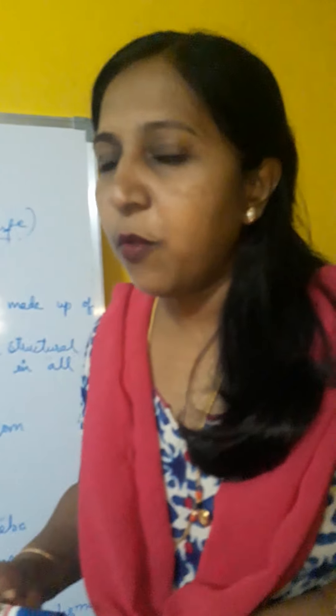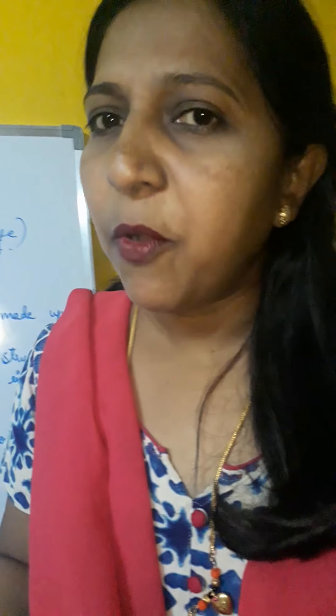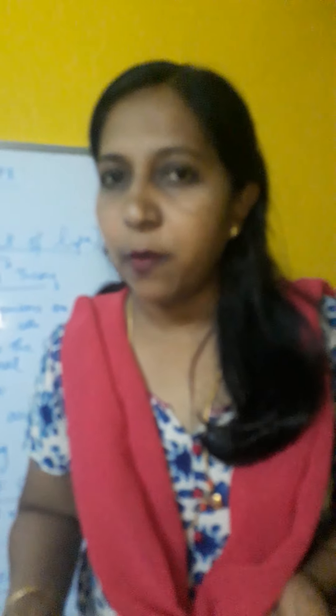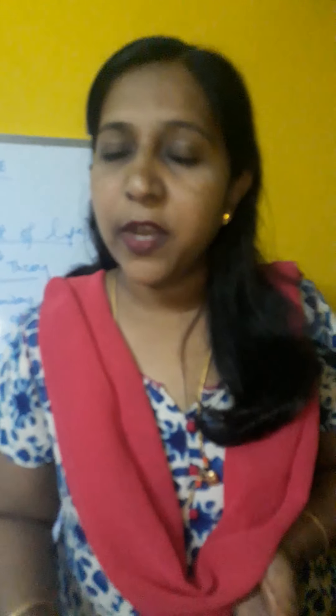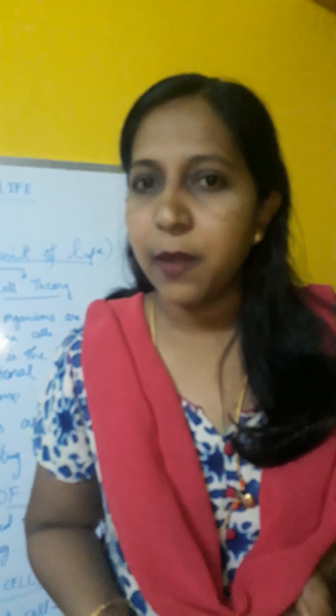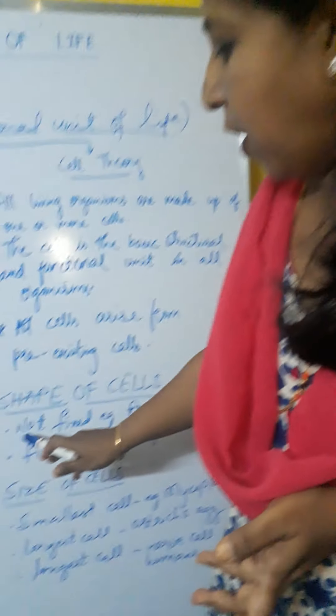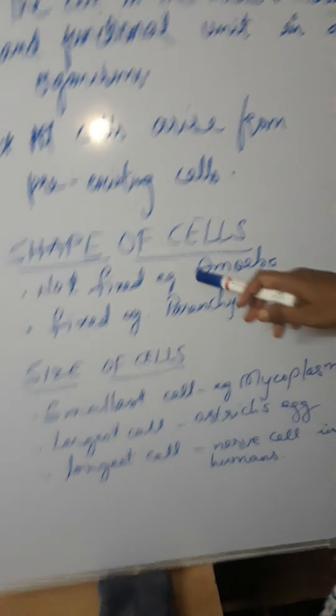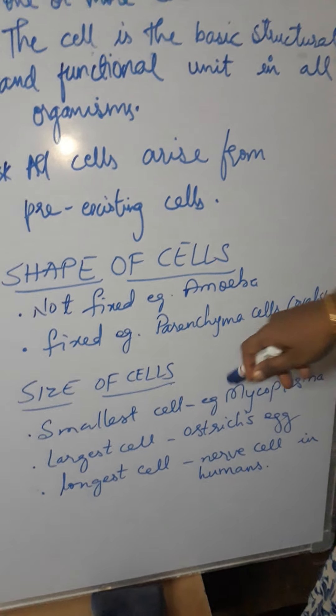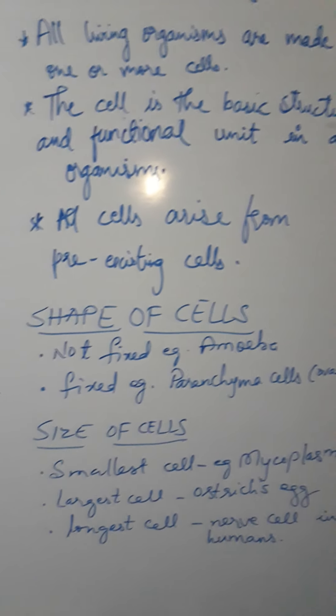When we talk about the shape of the cell, it may be fixed or may not be fixed. It is fixed in some cells like parenchyma cells, which have an oval shape. It is not fixed in others — for example, amoeba is shapeless and can take any shape. So: not fixed — example amoeba; fixed — example parenchyma cells with oval shape.